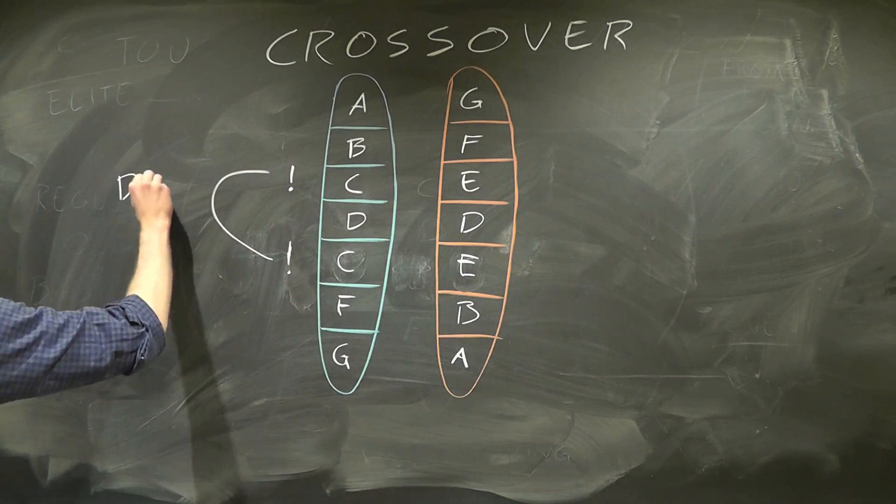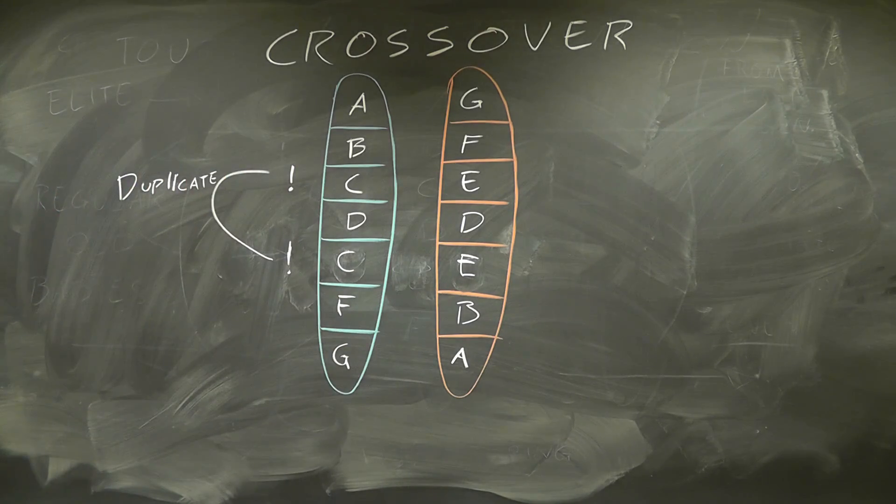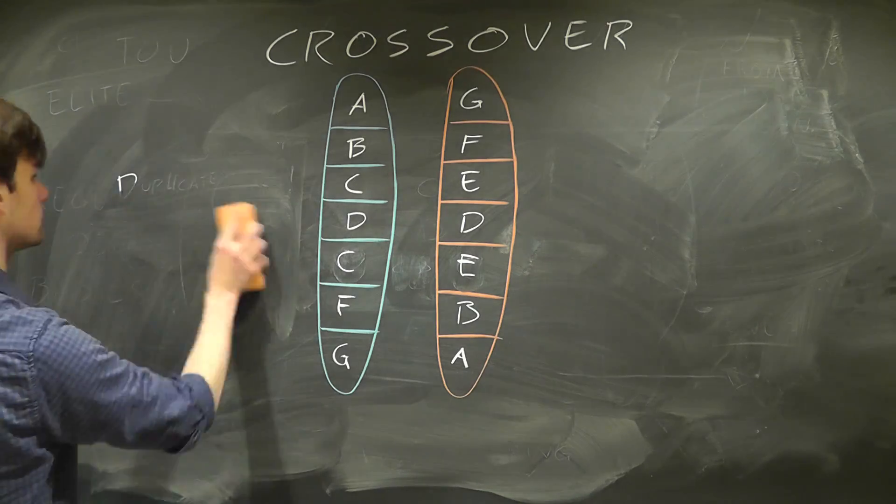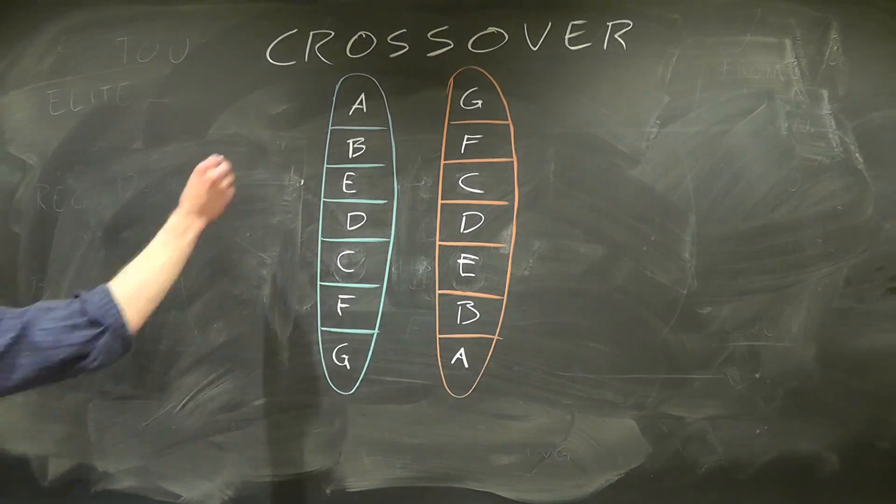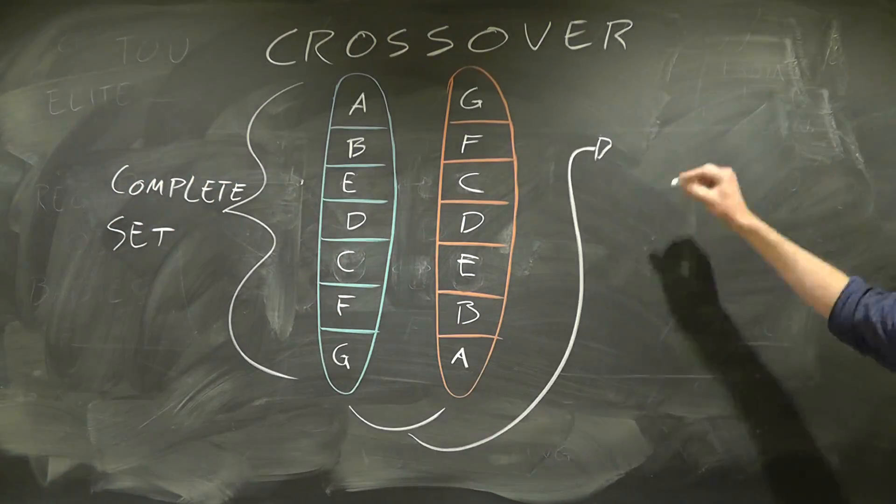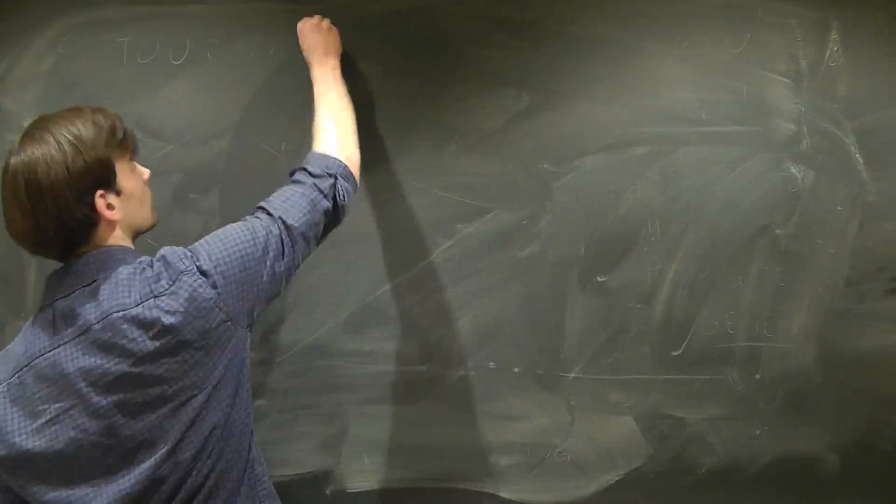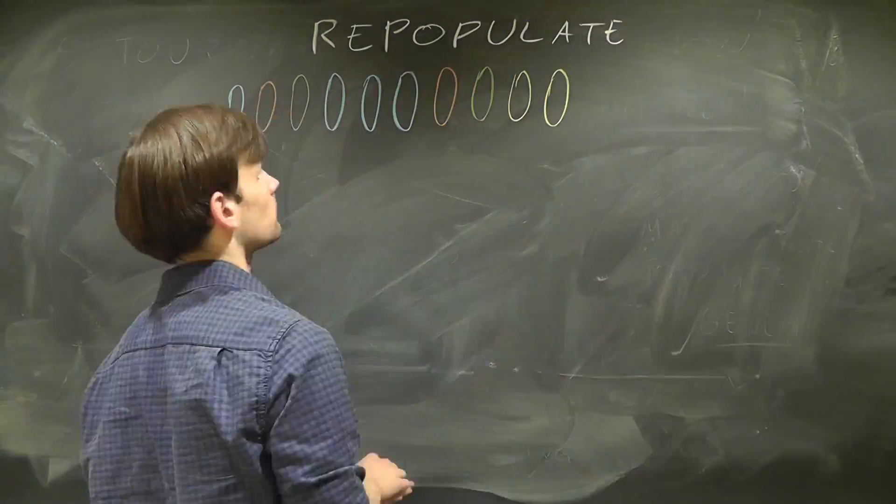Of course, because we only want to visit every town once, this will screw up our trip around Betabrook. For this reason, we take a look at either one of the parent chromosomes and switch any duplicate gene. Then we keep swapping until both parents have a complete set of genes again. Now the mating step is complete and we just need to repopulate with a new offspring.